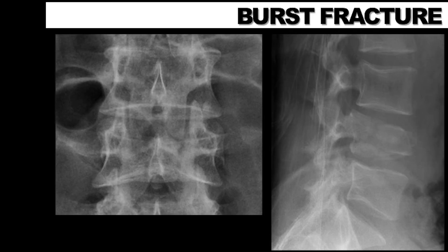Essentially, the intervertebral disc is driven into the vertebral body below and typically occurs following a fall from a height — often landing on a person's feet — or from a motor vehicle accident. This is equivalent to a Jefferson fracture discussed in the cervical spine. The clinical presentation includes back pain or lower limb neurological deficits. These fractures most commonly occur at the L1 vertebral level, with about 90% occurring from T9 to L5.